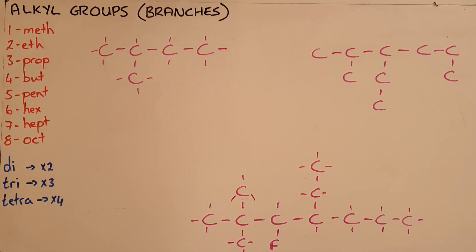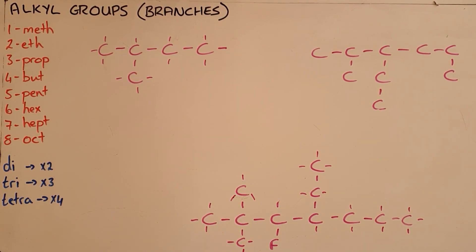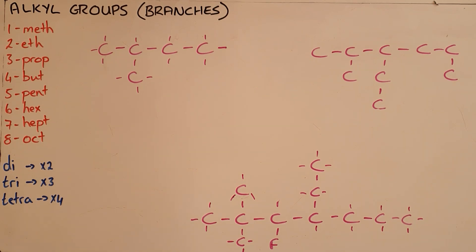Organic compounds are often found to have branches or what we call alkyl groups that are attached to the main carbon chain. And there is a naming convention for how we name those branches or alkyl groups.